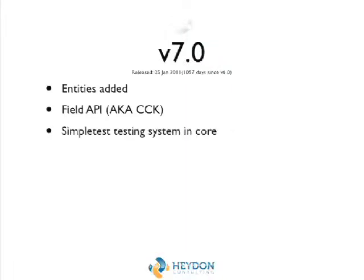System testing — this is where we started getting testing. Unfortunately these were end-to-end tests — we can't actually split things up and do unit tests properly. There are a couple in version 7 but it's all pretty much end-to-end testing running the whole system.